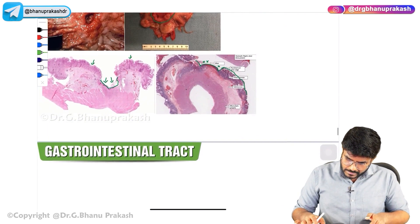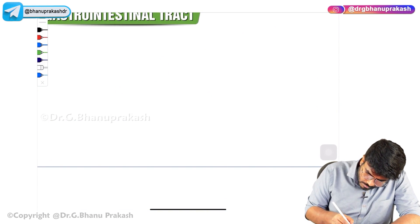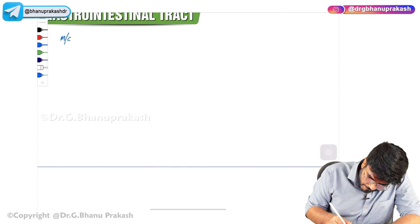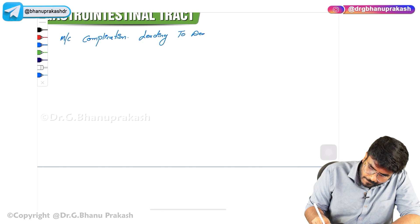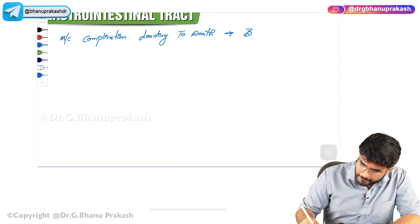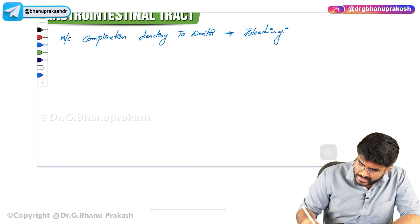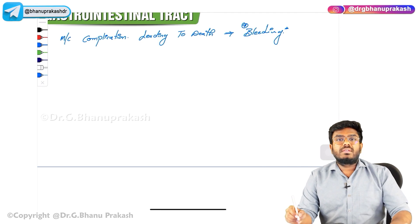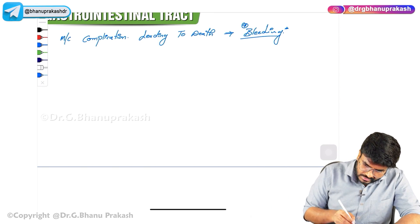Some important MCQs for your exam: the most common complication leading to death is bleeding. Gastric ulcers and duodenal ulcers will bleed, and that bleeding will cause death. Blood pressure will decrease, hypovolemia will occur, and the patient will die.